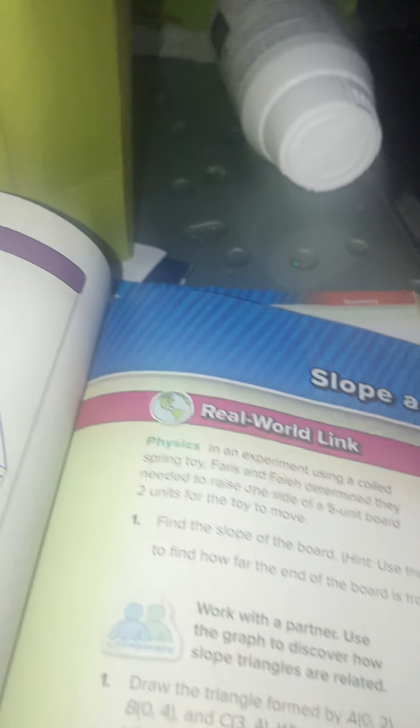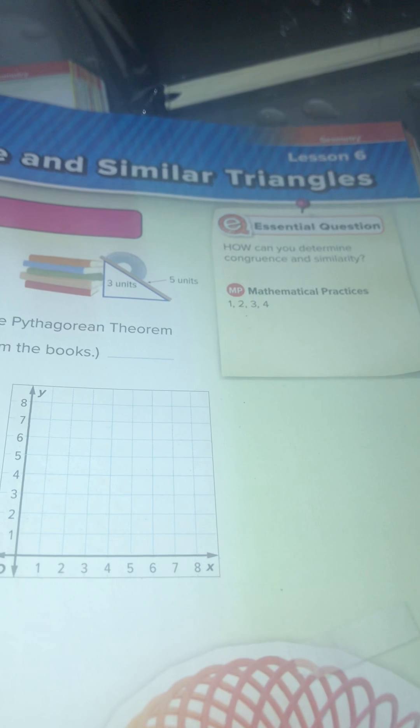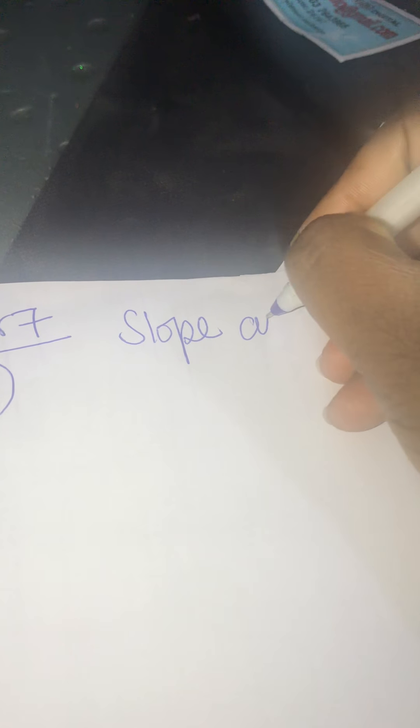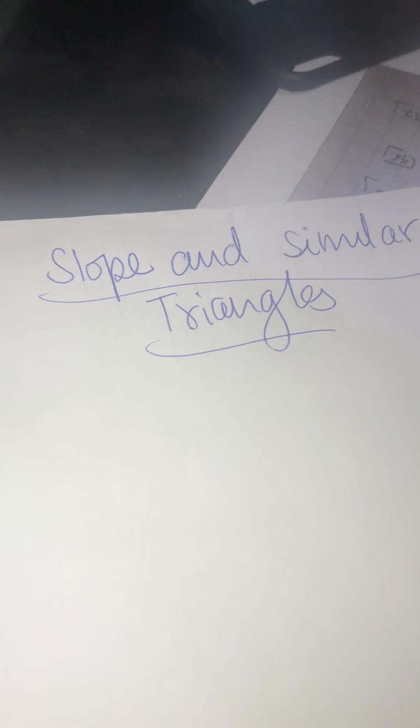Okay, grade 8, this is chapter 7, lesson 6, and we are doing slope and similar triangles.